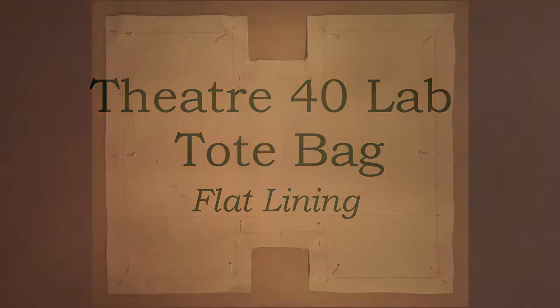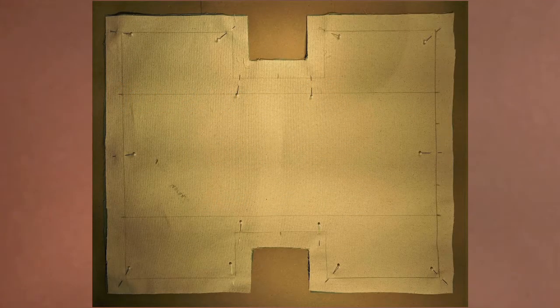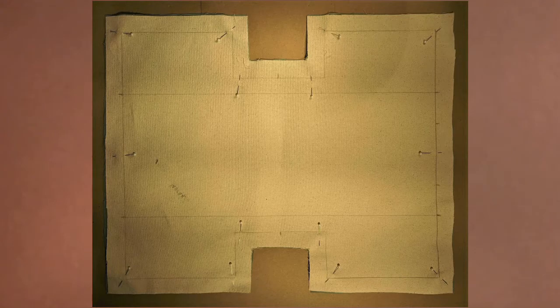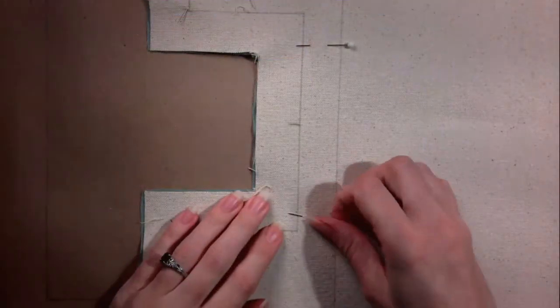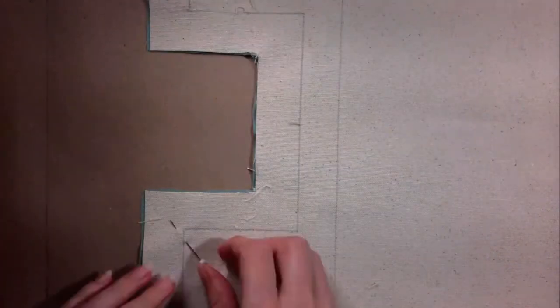When all of the pieces are cut out, it is time to flat line the bag body. Find the bag body with the twill flat lining pinned to it. Unpin the layers and press each layer flat using the iron.